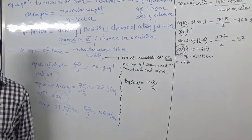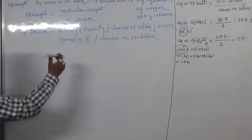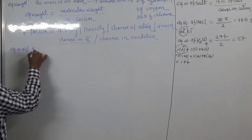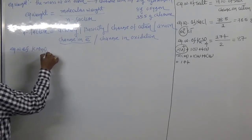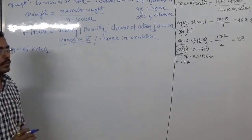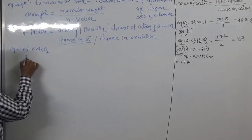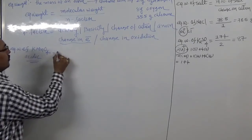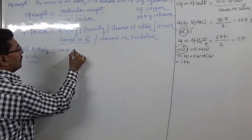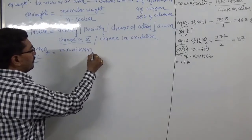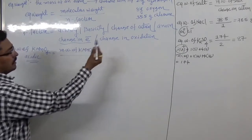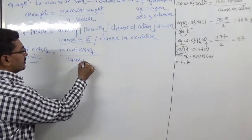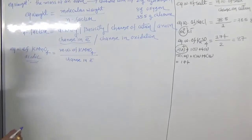Now we want to find the equivalent weight of KMnO₄. The equivalent weight of KMnO₄ depends on the medium. In acidic medium, we use the formula: molecular weight of KMnO₄ divided by the change in electron or change in oxidation number.